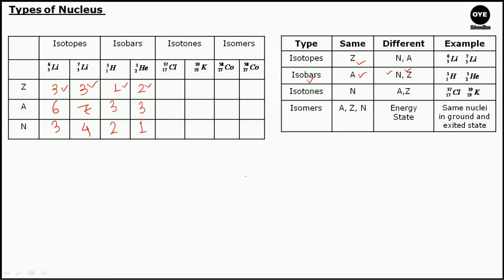The third classification is isotones. Isotones have the same neutron number but differ in atomic number and mass number. For example, ₁₇Cl³⁷ has atomic number 17 and mass number 37, giving a neutron number of 37 − 17 equals 20. And ₁₉K³⁹ has atomic number 19 and mass number 39, giving a neutron number of 39 − 19 equals 20. In both cases the neutron number is the same, so they are known as isotones.